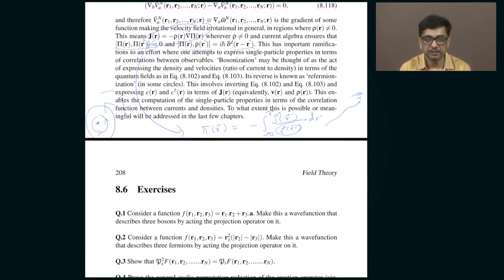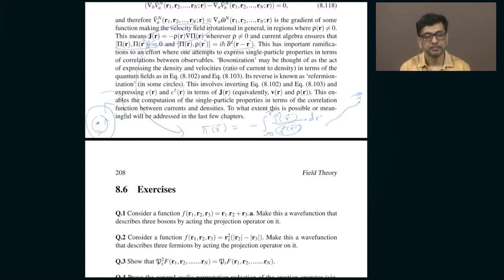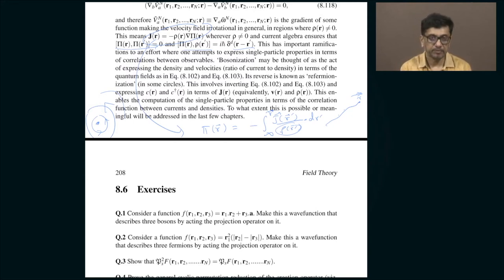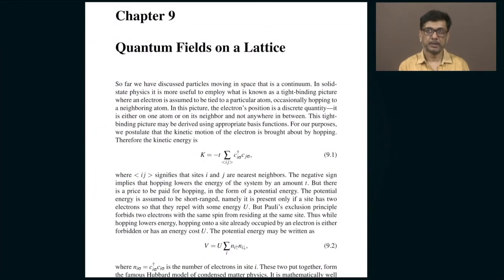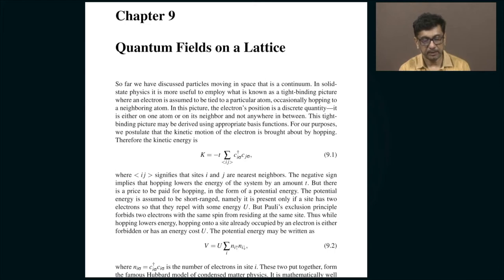The distinction between fermions and bosons comes somewhere else, which I will get to later. At this level, the current and density have the same form regardless of whether the underlying particles are fermions or bosons. That is pretty much where I had left off. Now I am going to switch gears and discuss quantum fields on a lattice.